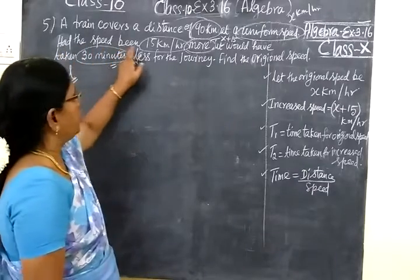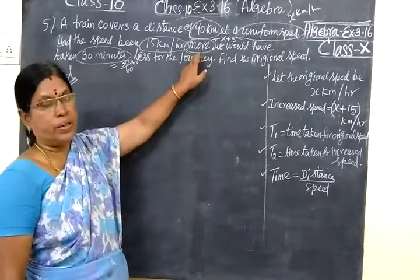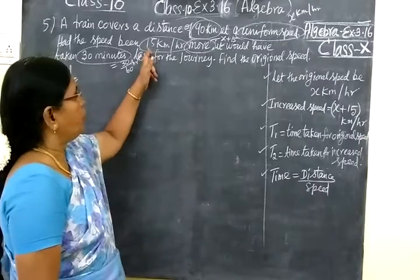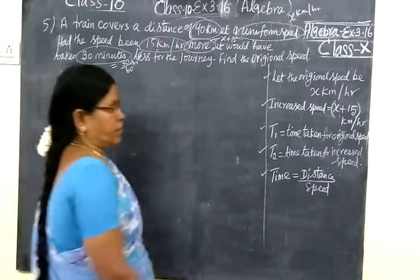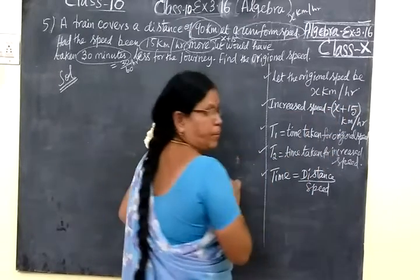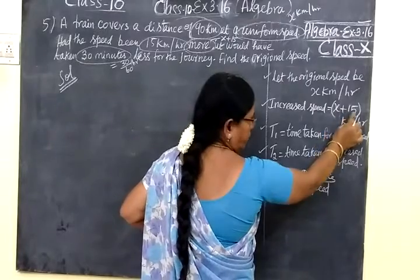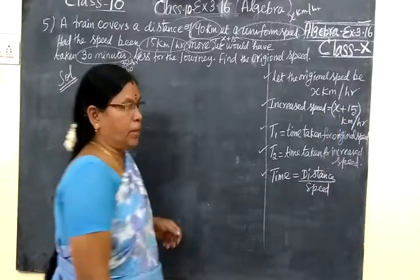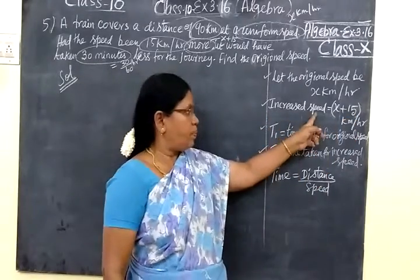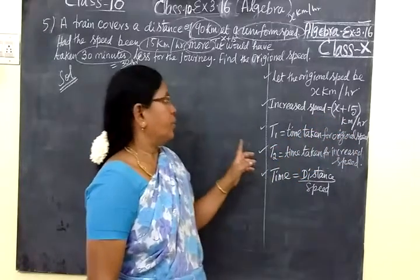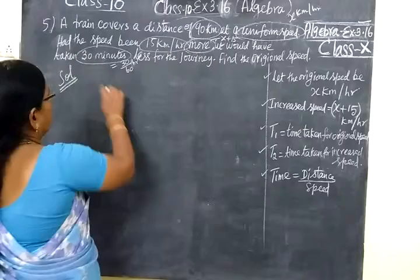At the speed we increase—more means increase. Speed is less. Then 15 km speed increases. One hour is x km speed. One speed increases x plus 15 km speed. So, increased speed equal to x plus 15 km per hour. Now, it is given.